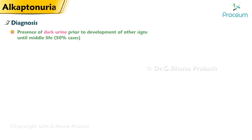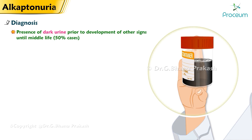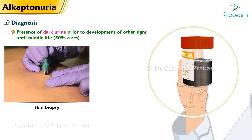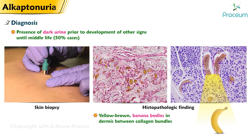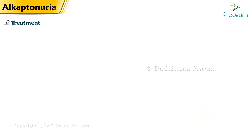Diagnosis: About half the patients will be diagnosed for the presence of dark urine prior to development of other signs until middle life. The diagnosis should be suspected in a patient whose urine darkens to blackness. Skin biopsy may be helpful in establishing the diagnosis. Alkaptonuria has the histopathologic finding of yellow-brown banana-shaped deposits — banana bodies — in the dermis between collagen bundles.